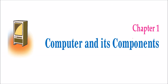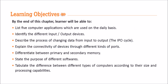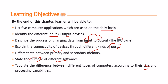This is chapter 1, Computer and Its Components of class 10. What we are going to see in this series: we'll list computer applications used on a daily basis, identify different input and output devices, the IPO process (input to output), connectivity of devices with different ports, differentiate between primary and secondary memory, different softwares and their purposes, and differences between types of computers based on size and processing capability.